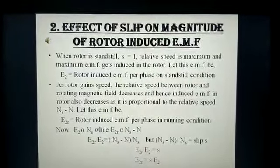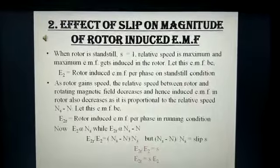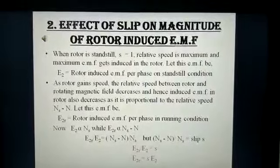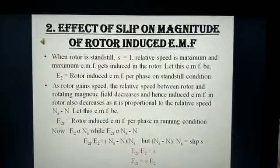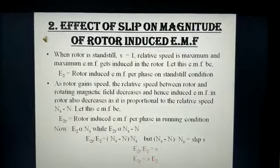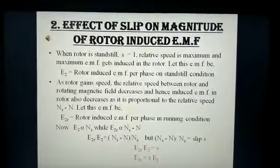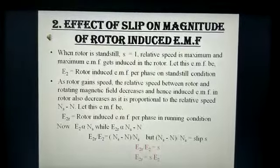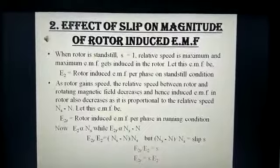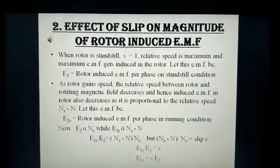As the motor gathers speed, there will be a relative speed difference NS minus NR, where NS is the speed of the rotating magnetic field and NR is the rotor speed. The speed difference NS minus NR depends on the induced EMF on the rotor during the running condition, given as E2R. Therefore, E2R is directly proportional to NS minus N. Using these two conditions, we obtain E2R / E2 = slip S, where S = (NS minus N) / NS. Finally, E2R = S × E2. The EMF induced in the rotor during the running condition is reduced by slip times the EMF induced during the standstill condition.